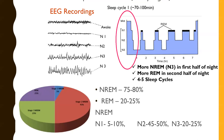Throughout nocturnal sleep, we spend more time in NREM sleep and 20 to 25% in REM sleep. Within NREM sleep, nearly 50% is spent in N2 and around 25% in N3.